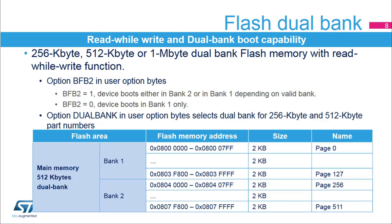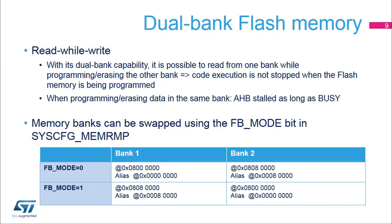The dual bank option is used to select either a single bank or a dual bank for the 256 KB and 512 KB device part numbers. For instance, when dual bank is selected for 512 KB devices, 128 pages are in bank 1 and 128 pages are in bank 2. The first page name in bank 2 is always page 256, regardless of the device's memory size, as the page name MSB refers to the bank number.